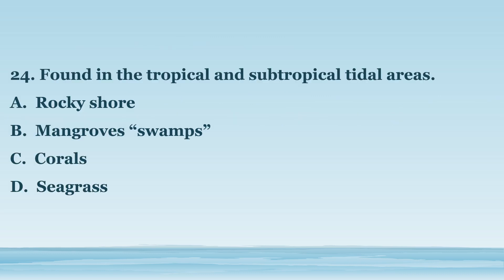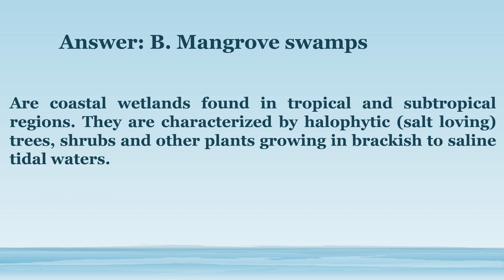Number 24. Found in the tropical and subtropical tidal areas. A. Rocky Shore. B. Mangrove Swamps. C. Corals. D. Seagrass. The answer is letter B. Mangrove Swamps. Are coastal wetlands found in tropical and subtropical regions. They are characterized by halophytic (salt-loving) trees, shrubs, and other plants growing in brackish to saline tidal waters.